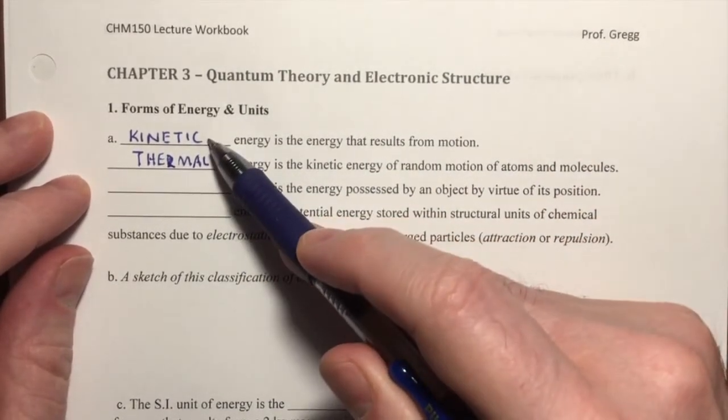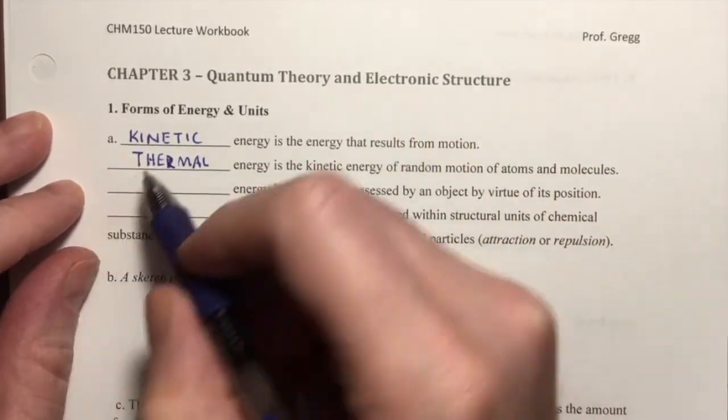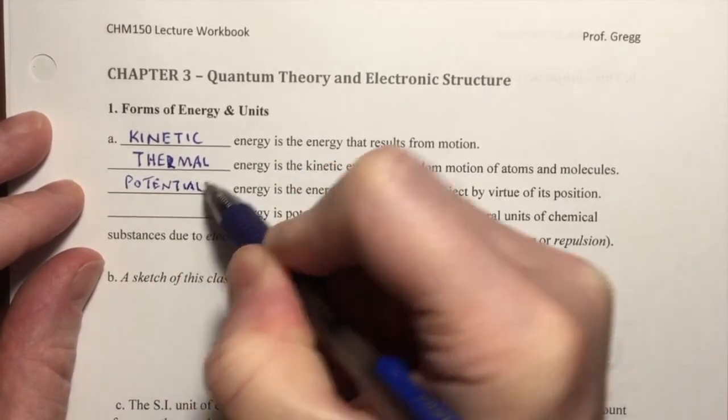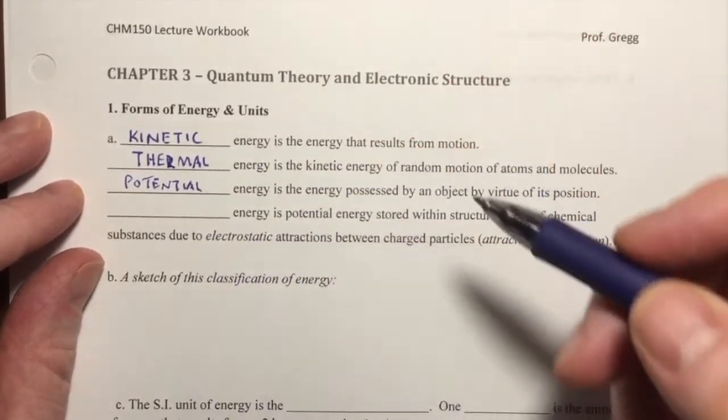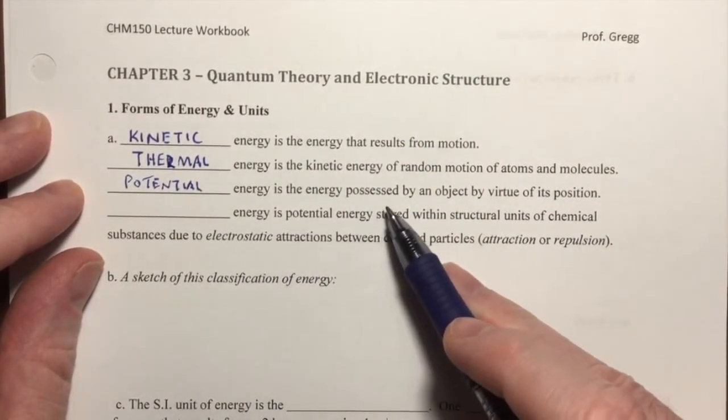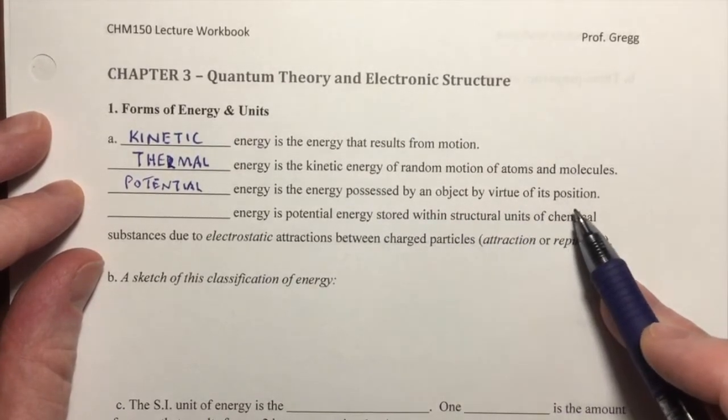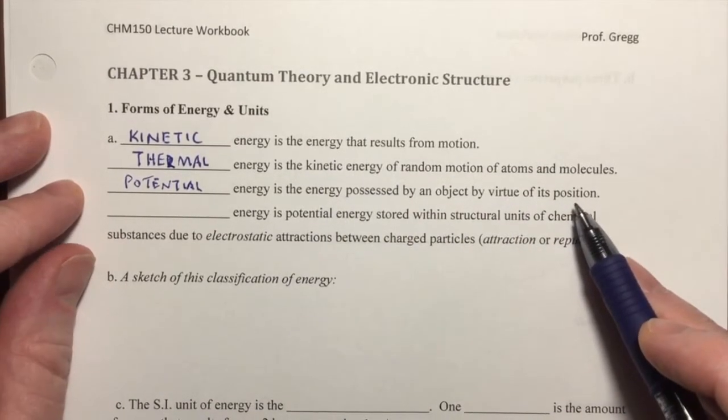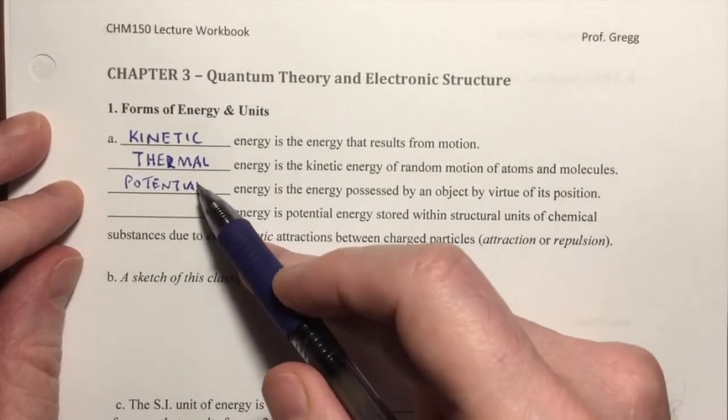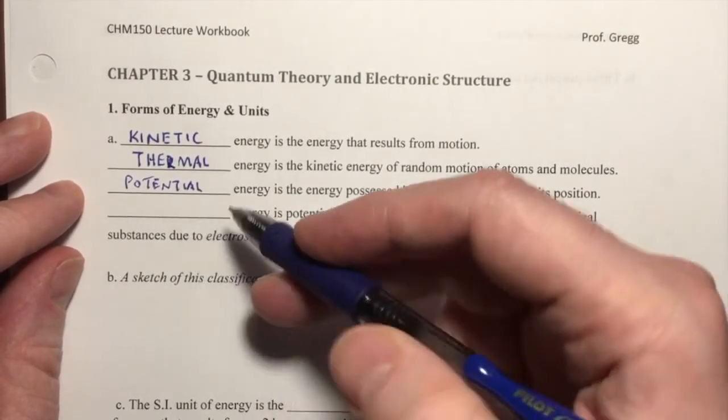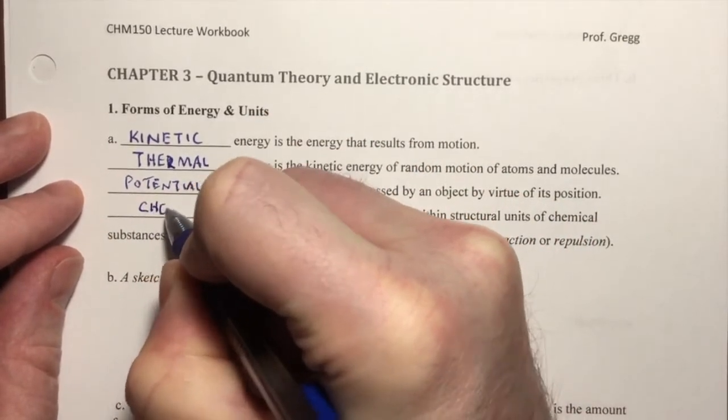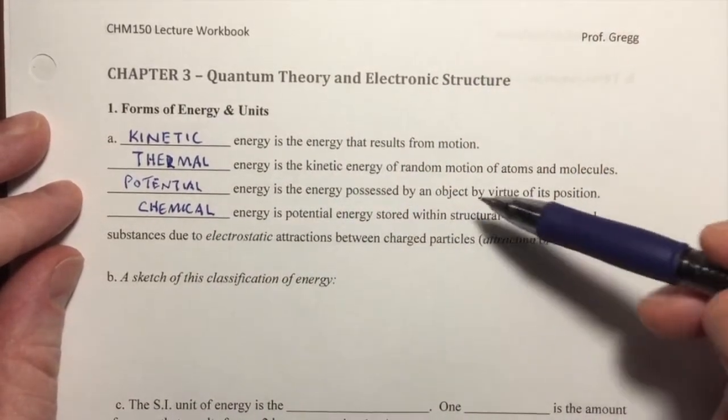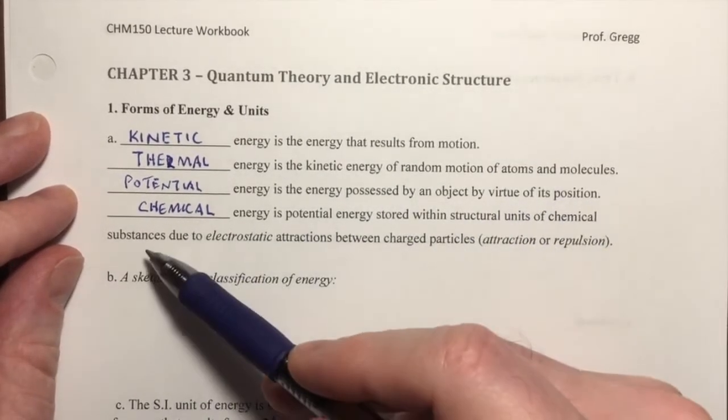In contrast to kinetic energy, which is the energy that results from motion, we have potential energy. Potential energy is the energy possessed by an object just by virtue of its position, by virtue of where it is. Not because it's moving, but because of where it is. And the type of potential energy that we're most interested in in chemistry is called chemical energy. Chemical energy is a potential energy. It is potential energy that is stored within structural units of chemical substances.